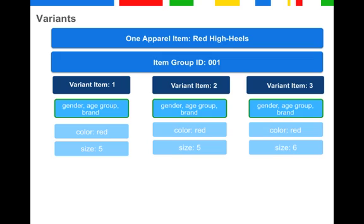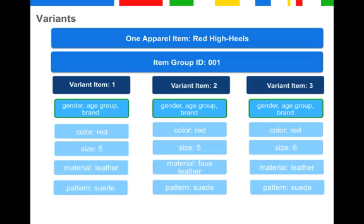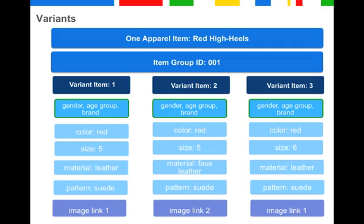In size five, since this is a very popular size, the merchant offers the shoe in two different materials—leather or faux leather. The pattern for both materials is suede. Don't forget, you need to submit an additional image link for each variant item you submit, if it makes sense. Variant items one and three only differ in size, so you don't need to submit different images, as we wouldn't be able to see the difference in a picture. It is also possible to submit different prices for each item.